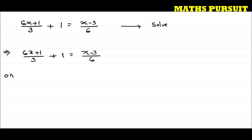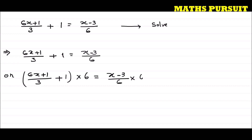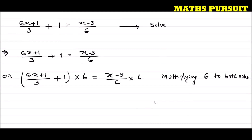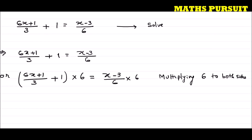So I can write: [(6x + 1)/3 + 1] × 6 = [(x − 3)/6] × 6. I am multiplying 6 to both sides so that I can eliminate this 6 from the denominator. The 6 on the right side cancels out.